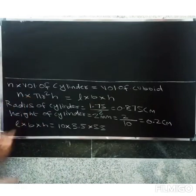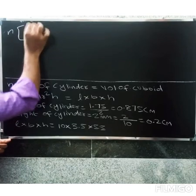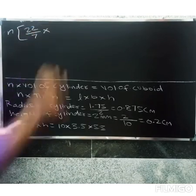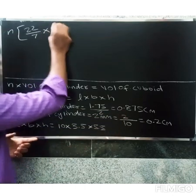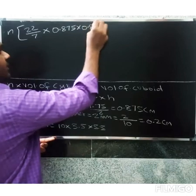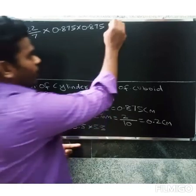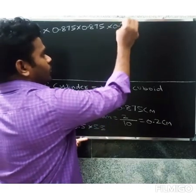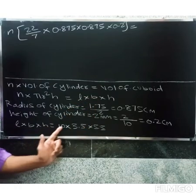So n into pi, which is 22 by 7, into r squared where radius is 0.875 into 0.875, into height of cylinder 0.2, equals 10 into 3.5 into 5.5.